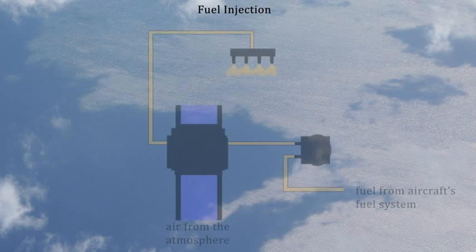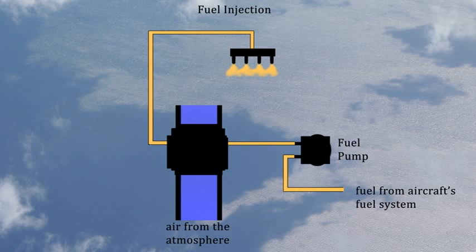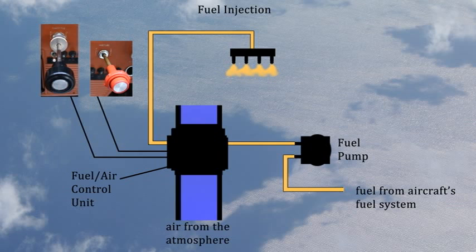A fuel injection system uses a fuel injection pump to supply fuel under pressure to a fuel-air control unit. This unit meters fuel and air to the engine according to the throttle and mixture control setting. The metered fuel then flows to a fuel flow divider, which splits the fuel equally among the cylinders. Each cylinder has its own fuel injector, which vaporizes the fuel just prior to the cylinder's intake valve.